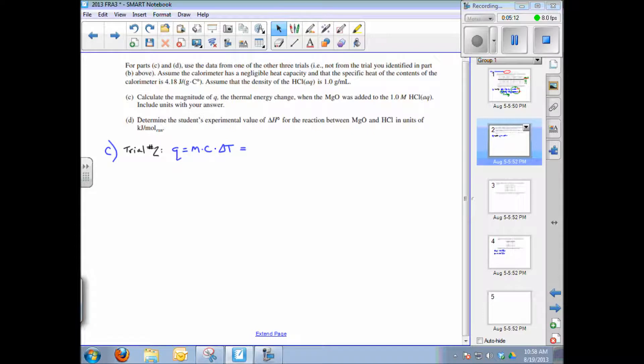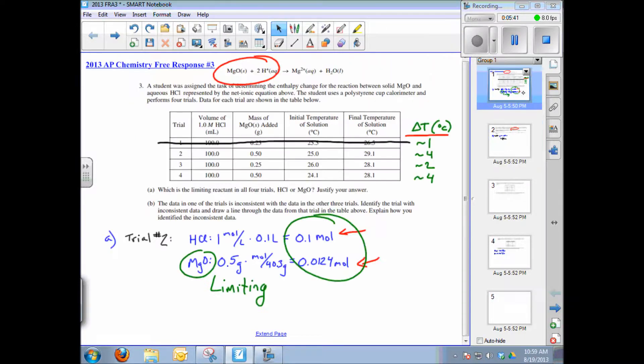There is a trick though. To calculate Q, of course it's M times C times delta T: the mass of the solution times the specific heat of the solution, which is given, times the delta T, which is given in the experimental data. We can substitute some things in, but there is something to be careful of, and that's the mass. We had 100 mL of the HCl at 1 gram per mL, so we know it's 100 grams, but we added 0.5 grams—let's use trial two—0.5 grams of the magnesium oxide.